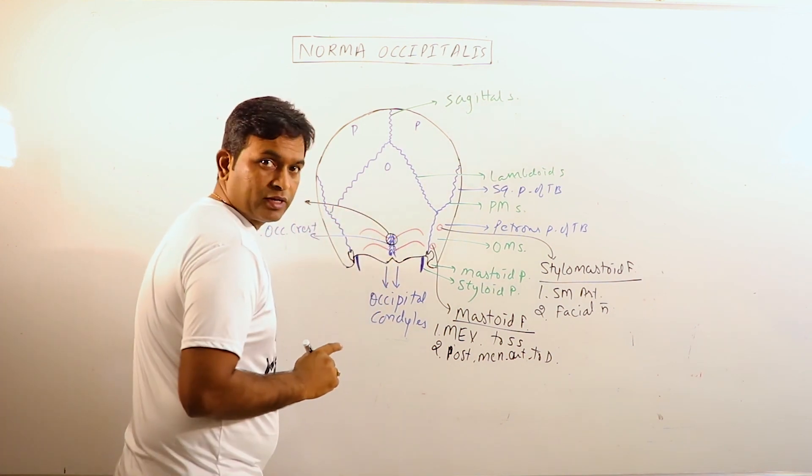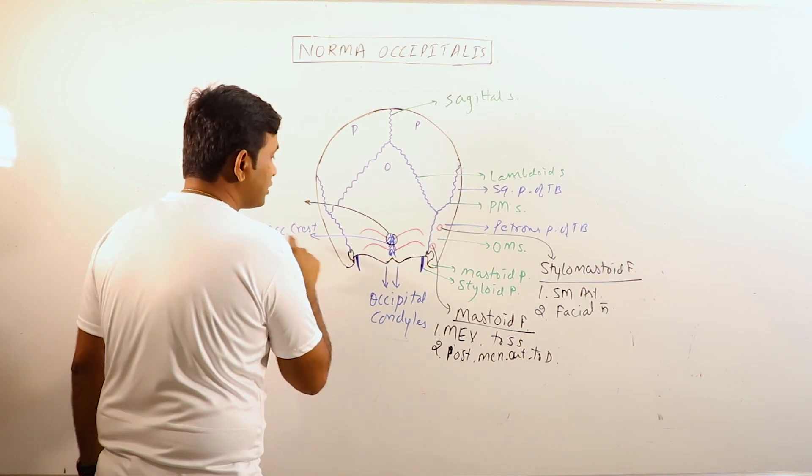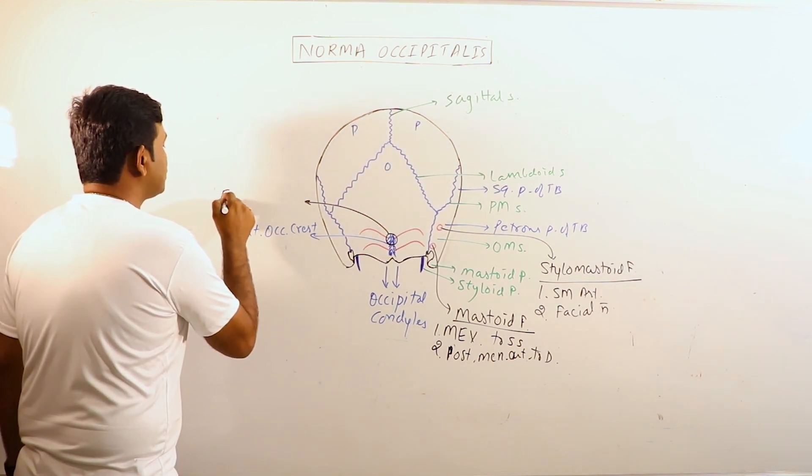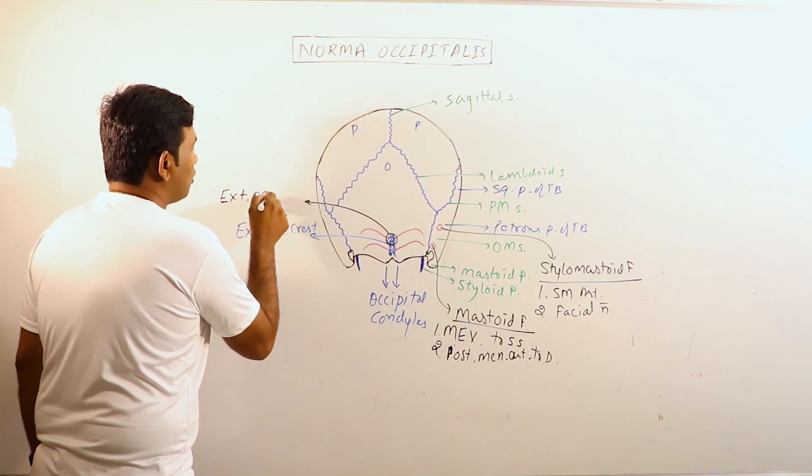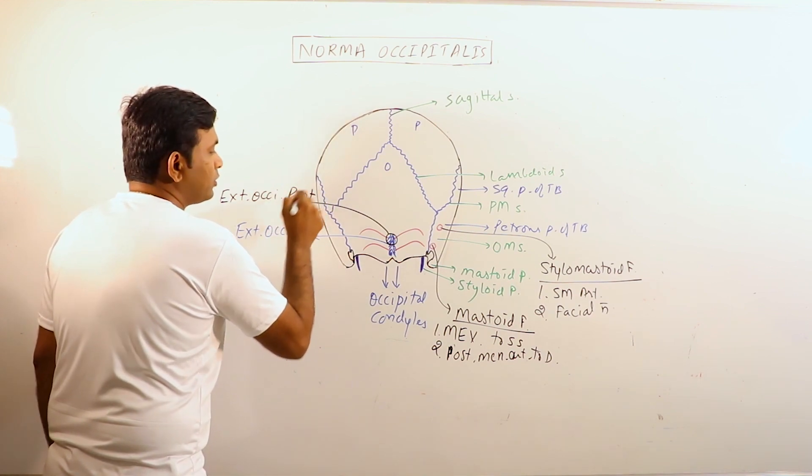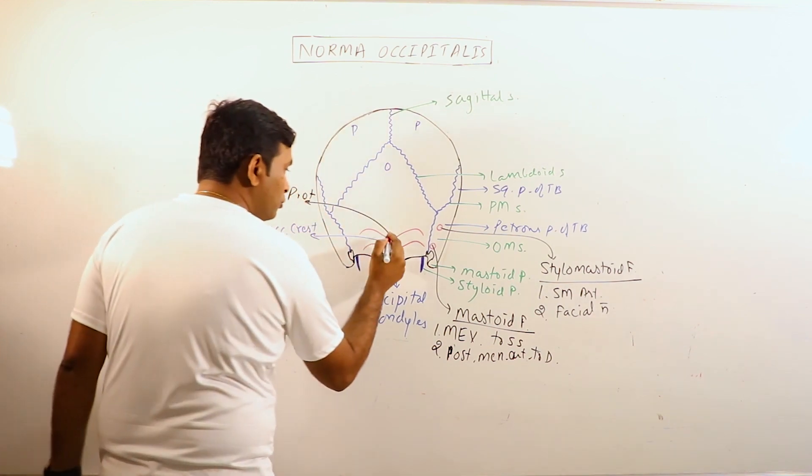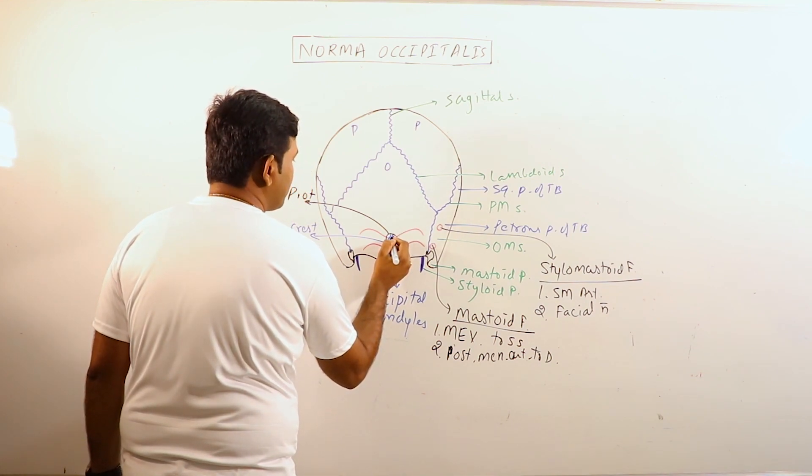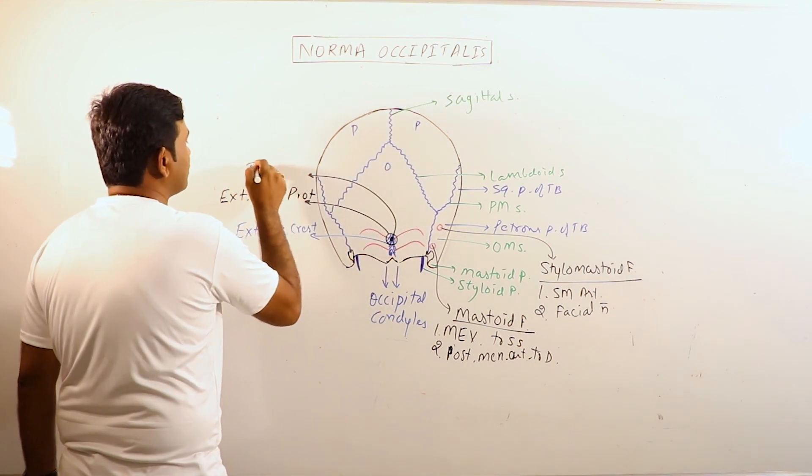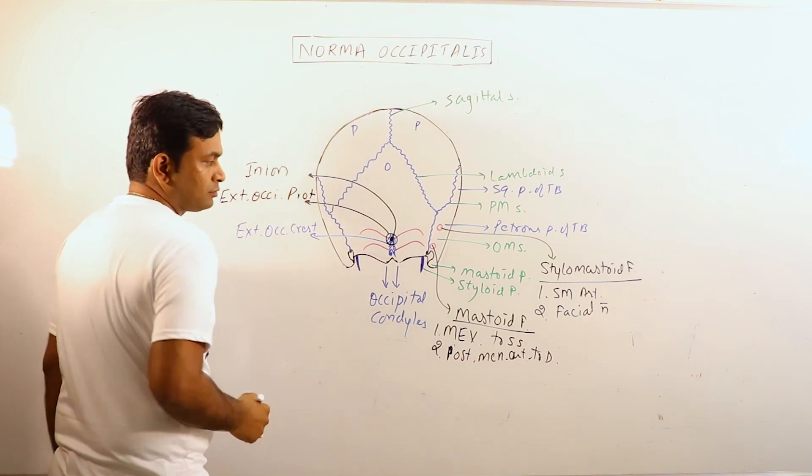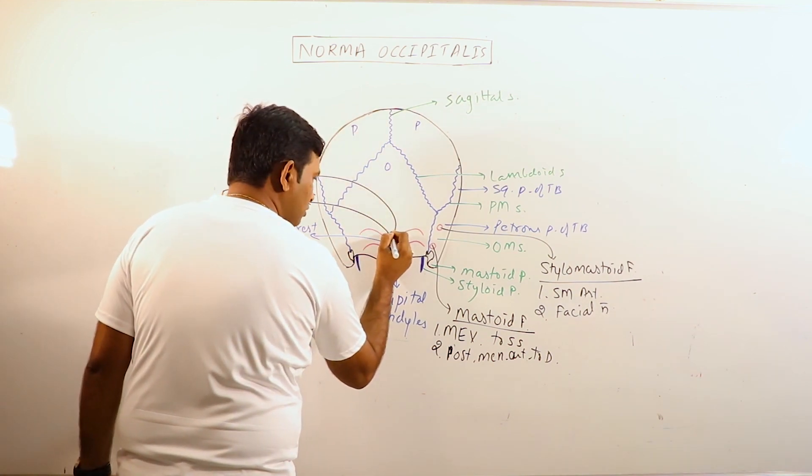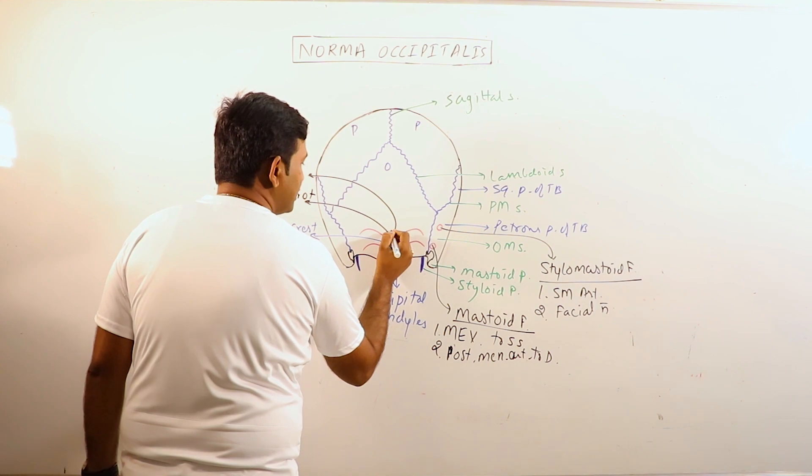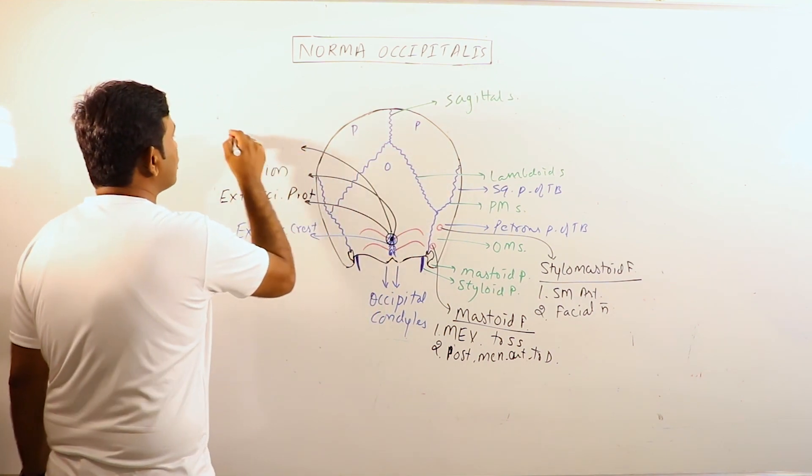This is a protuberance in the external occipital crest. It is known as external occipital protuberance. The most prominent point of this external occipital protuberance is known as inion. A little above this external occipital protuberance, there is another point which is known as occipital point.